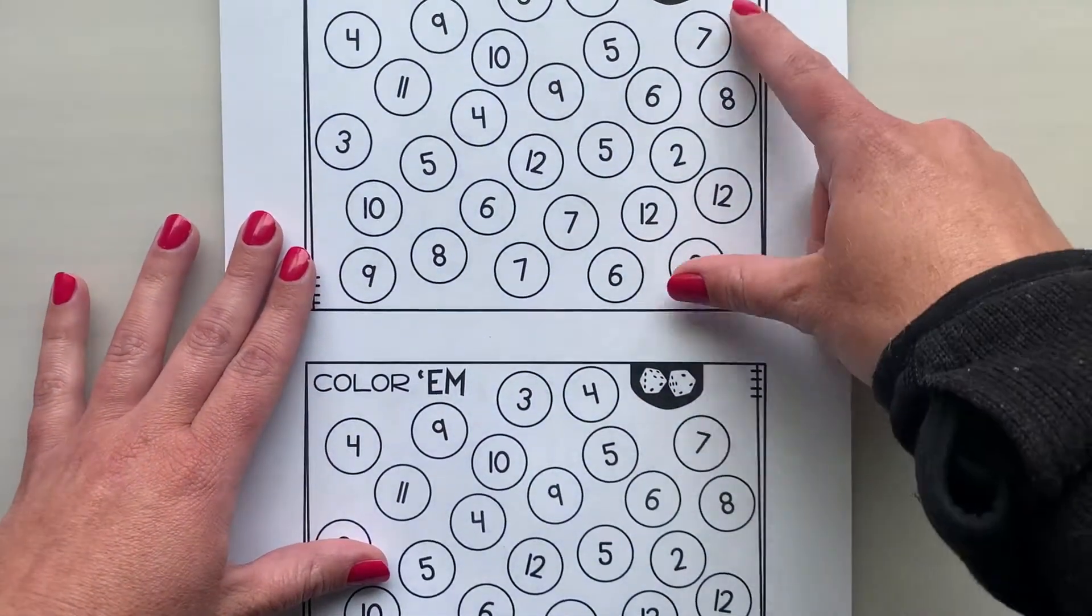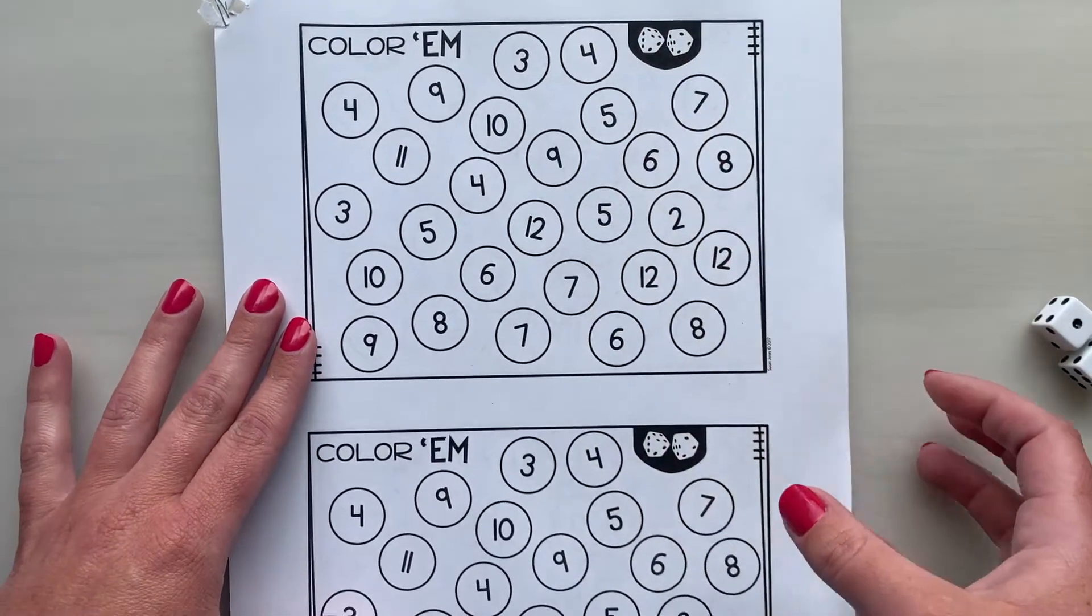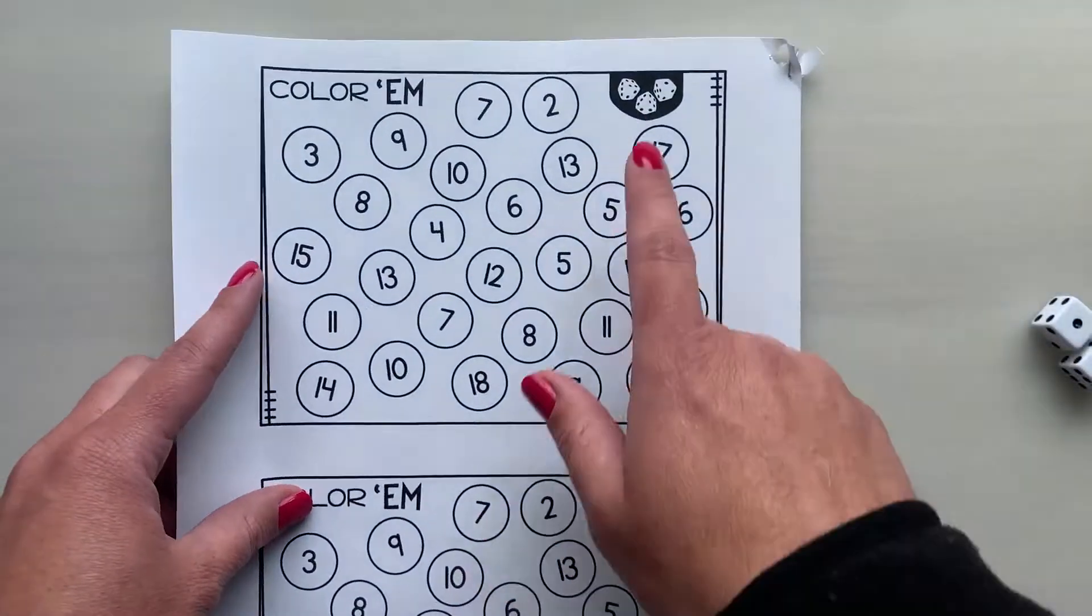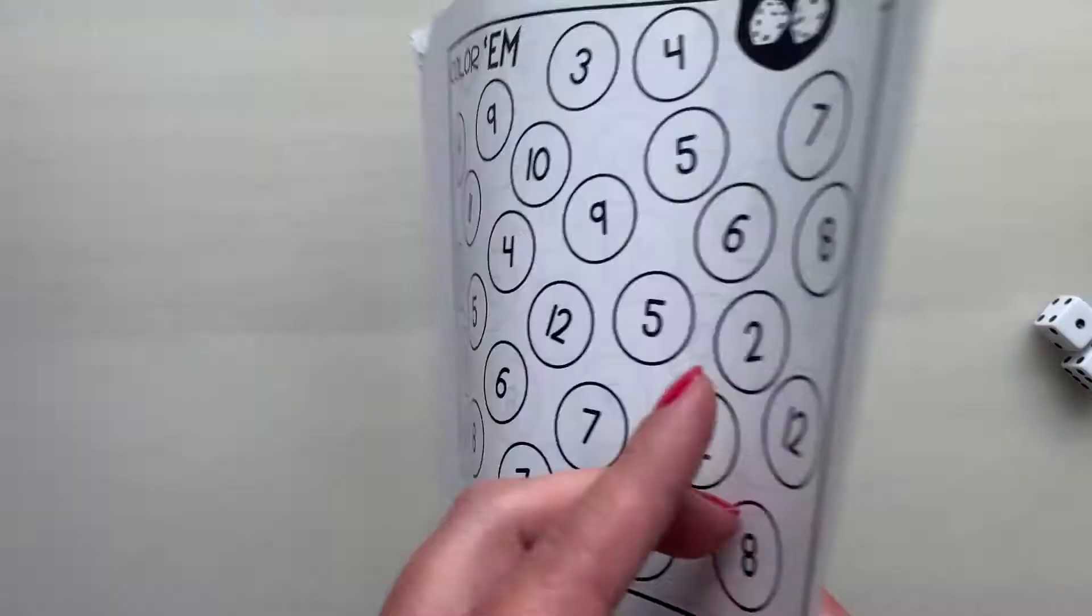So then I've included this so that you could play it either two dice two times or on the back side this one is for three dice and you could play that two different times as well.